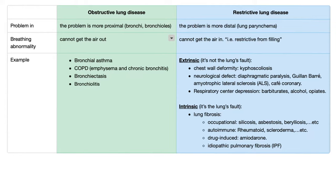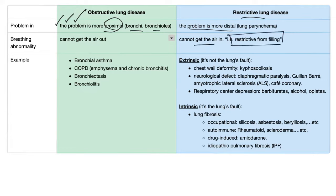Obstructive lung disease versus restrictive lung disease. In obstructive, the problem is more proximal in the bronchi or bronchioles. In restrictive, the problem is more distal in the lung — though this isn't entirely accurate, since bronchiectasis, bronchiolitis, and emphysema are also more distal. For breathing abnormalities: in obstructive, the patient cannot get the air out; in restrictive, the patient cannot get the air in — the lungs are restricted from filling.